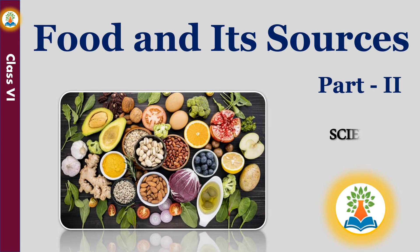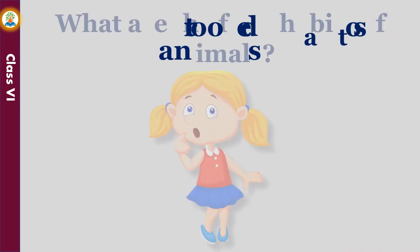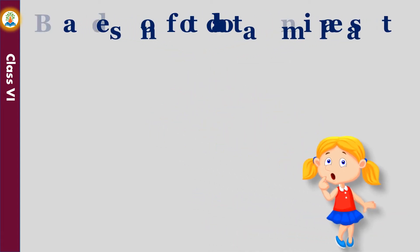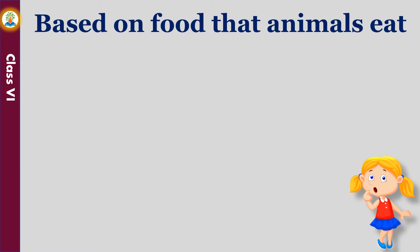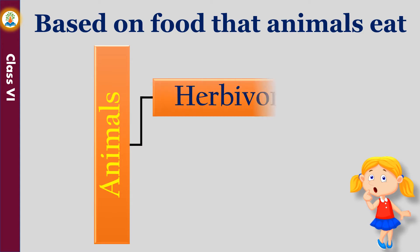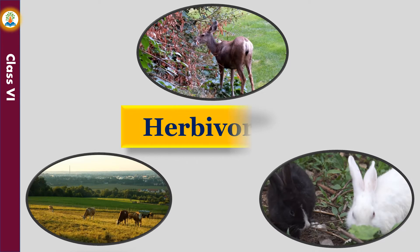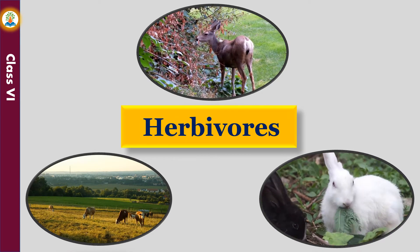Hello friends! In this video we will learn about food and its sources. Do you know what are the food habits of animals? Animals directly or indirectly depend on green plants for their food requirements. Based on the food that animals eat, we classify them into three main categories: herbivores, carnivores, and omnivores.